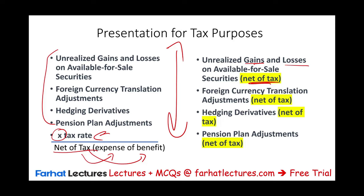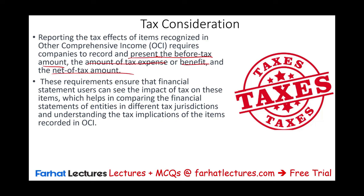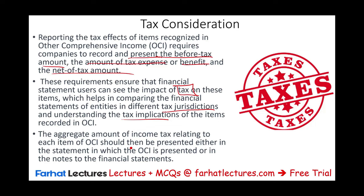These requirements ensure that financial statement users can see the impact of tax on these items — because you want to see when you are paying taxes, in which jurisdiction, and you want to separate taxes for different transactions. Taxes for operating income should be totally different from taxes on unrealized holding gains or losses. This is important when comparing financial statements of entities in different tax jurisdictions and for understanding the tax implications of items reported in OCI. The aggregate amount of income tax relating to each OCI item should be presented either in the statements themselves or in the notes.